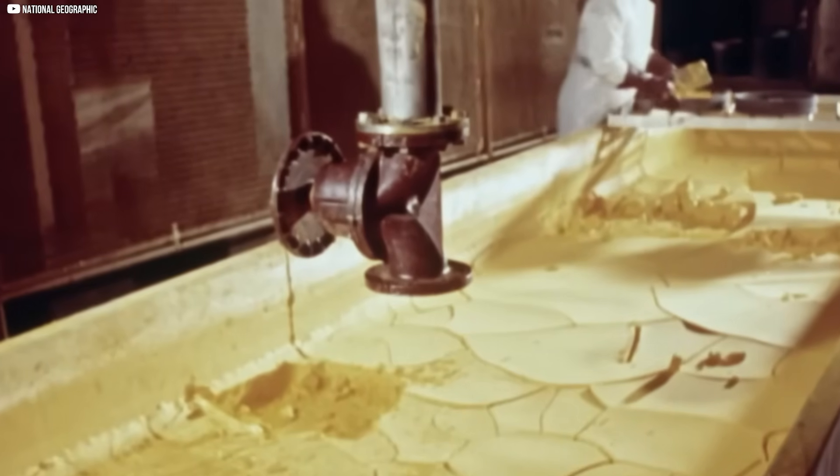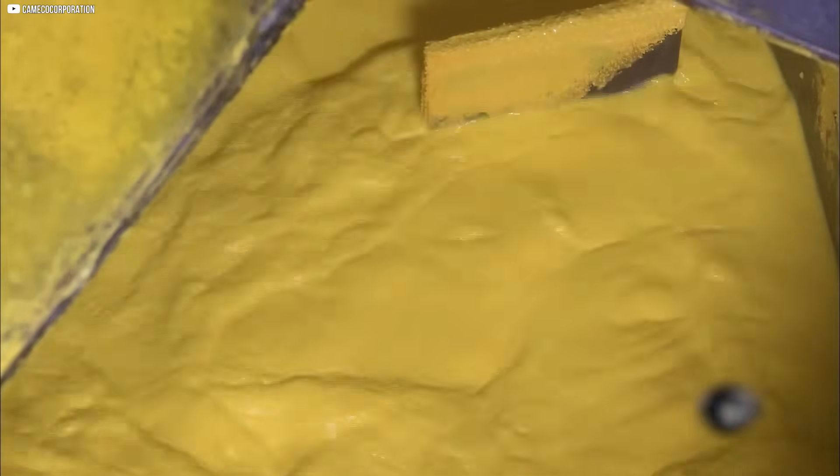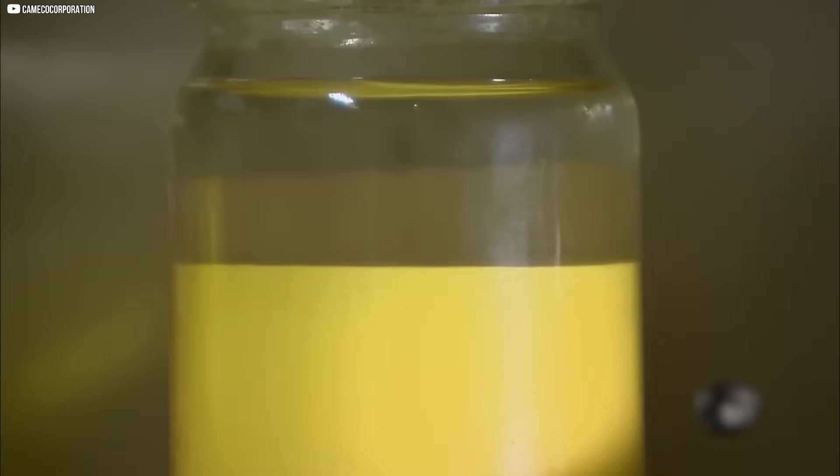This yellowcake is then sent for further refinement to make uranium hexafluoride, a compound essential for the next stage of enrichment.